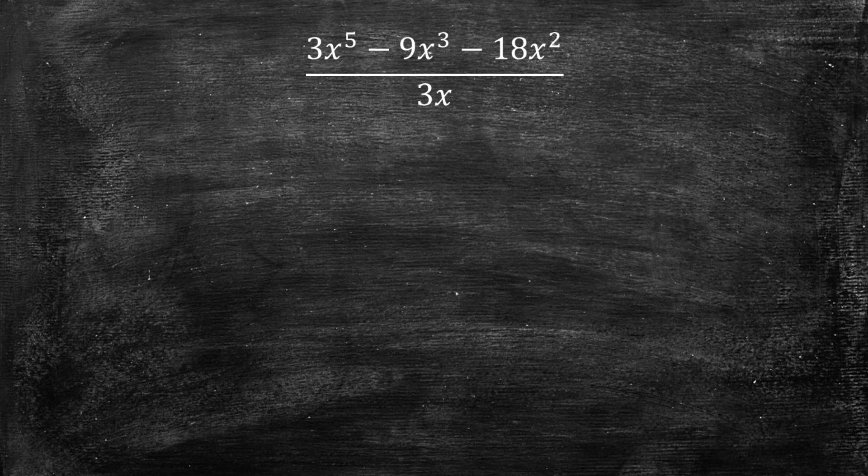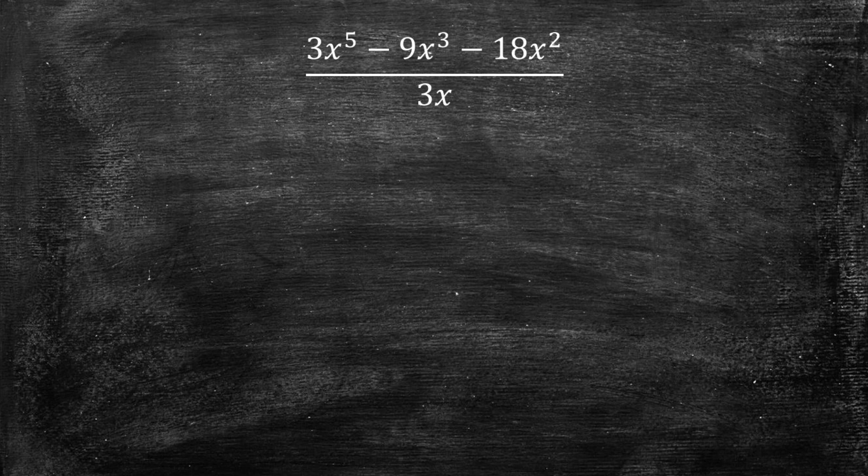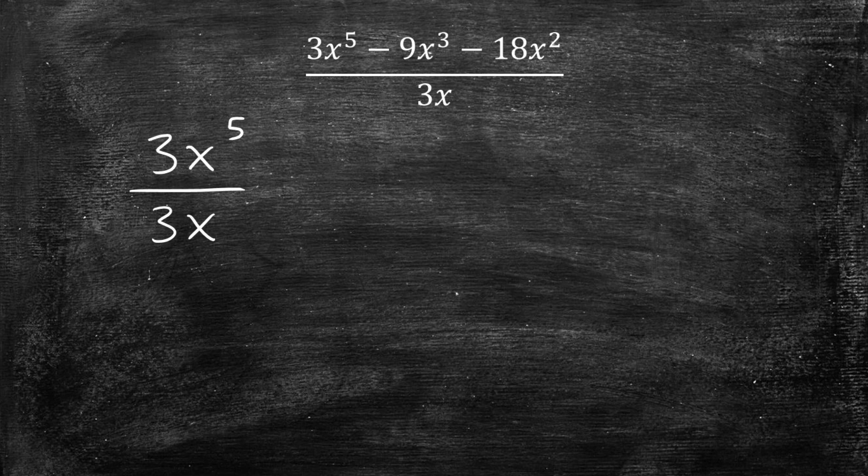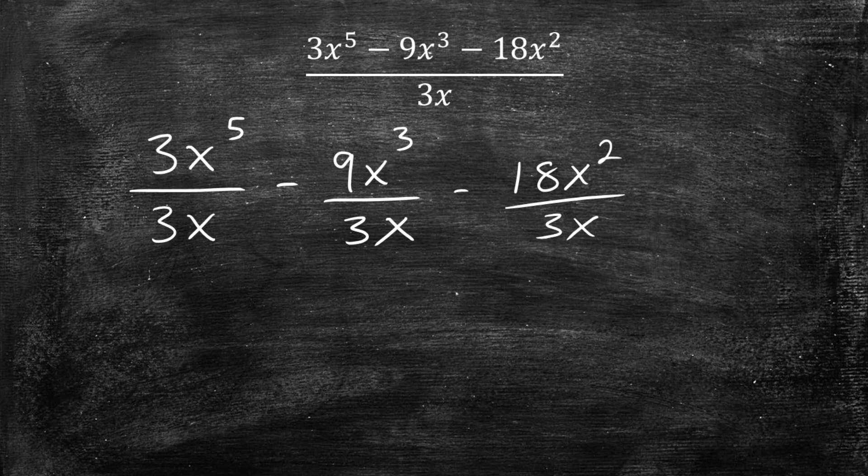Example number one: we have 3x to the fifth minus 9x cubed minus 18x squared all over 3x. So whenever this is the case where a polynomial is being divided by a monomial, what we could do is split it up and put the 3x under every term there.